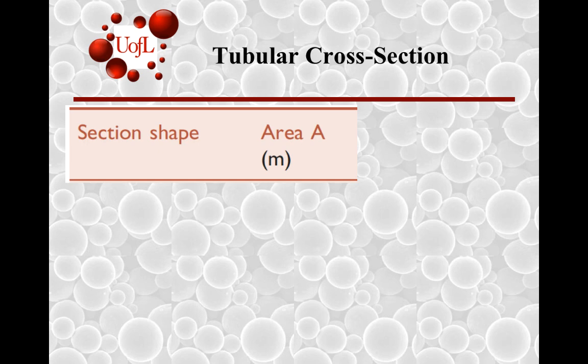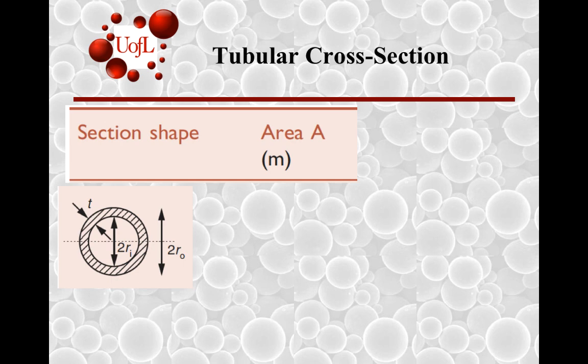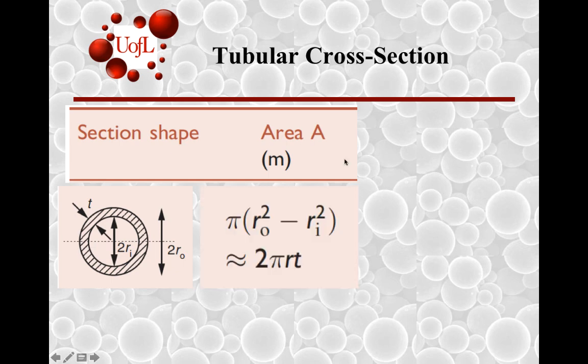Suppose you take a tubular cross-section instead—a hollow circle. Let's say the thickness is t, the outer radius is r₀, and the inner radius is rᵢ. Thus, the area can be determined by cutting this open and spreading it out, if it's ductile, to a rectangular cross-section of one side length t and an overall length of 2πr, which is the circumference. If you can neglect the difference between the radii, 2πrt is the area.